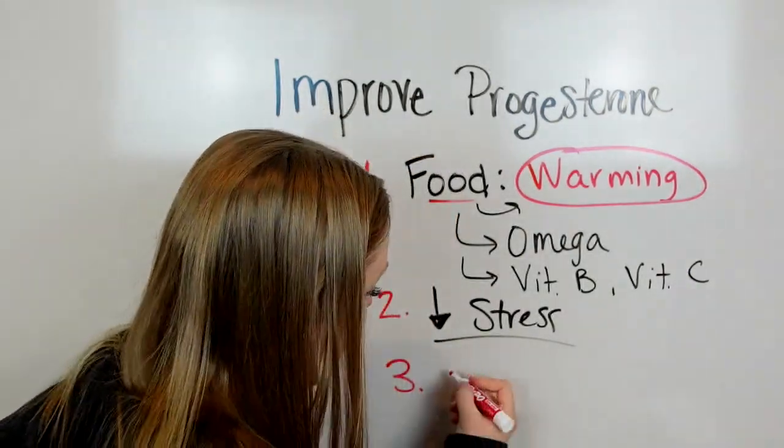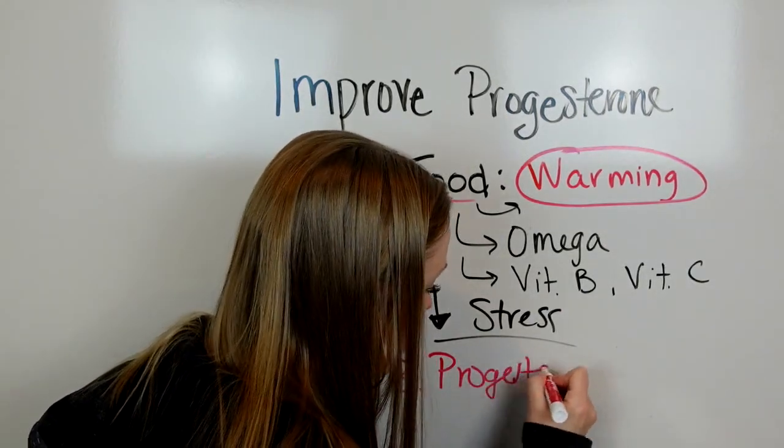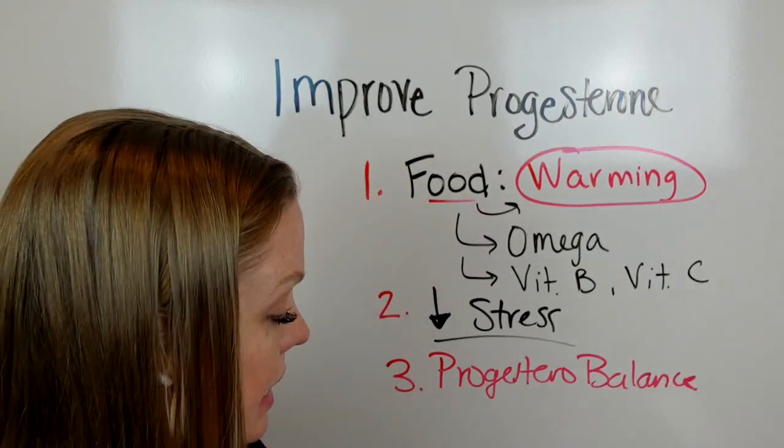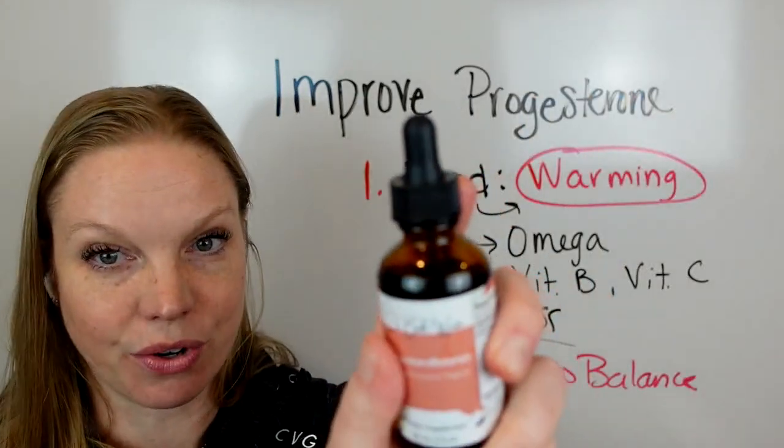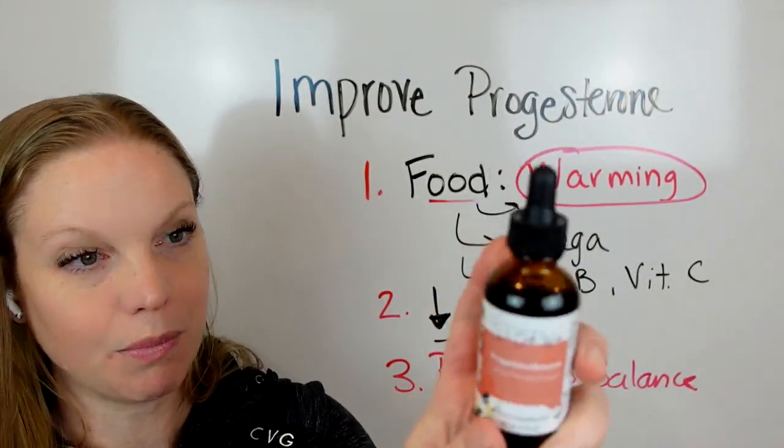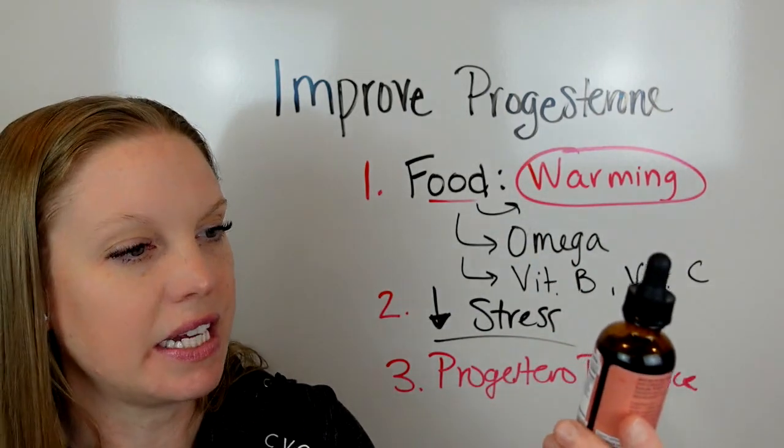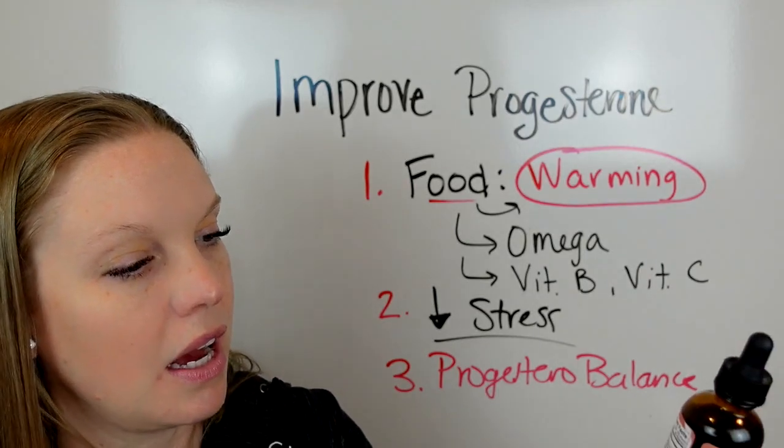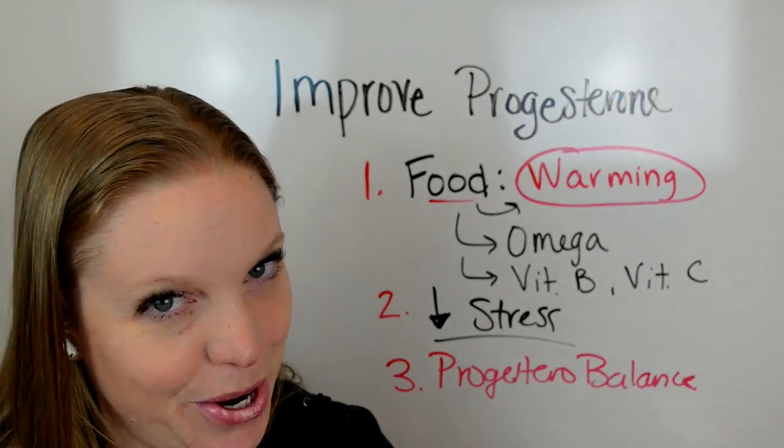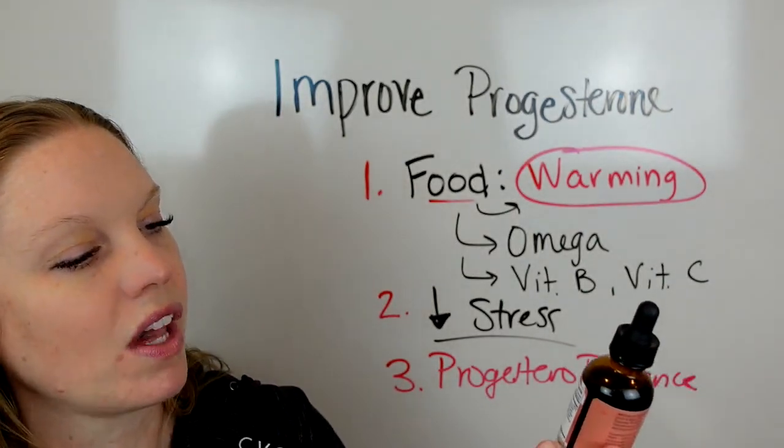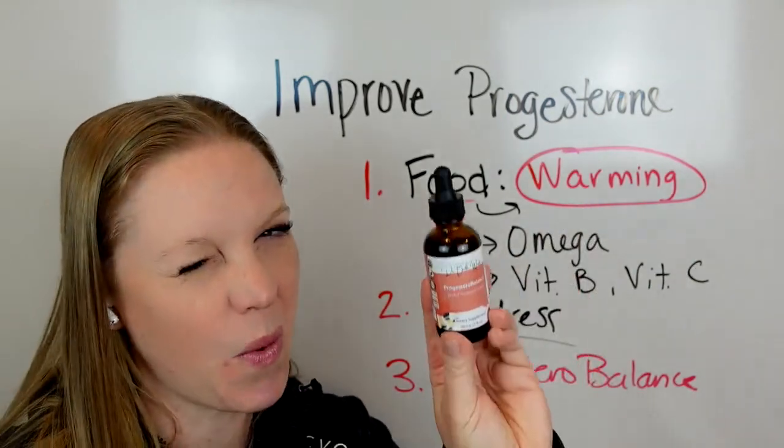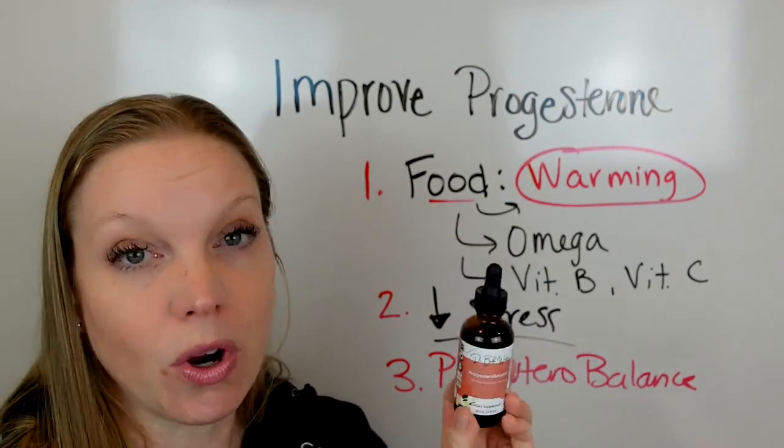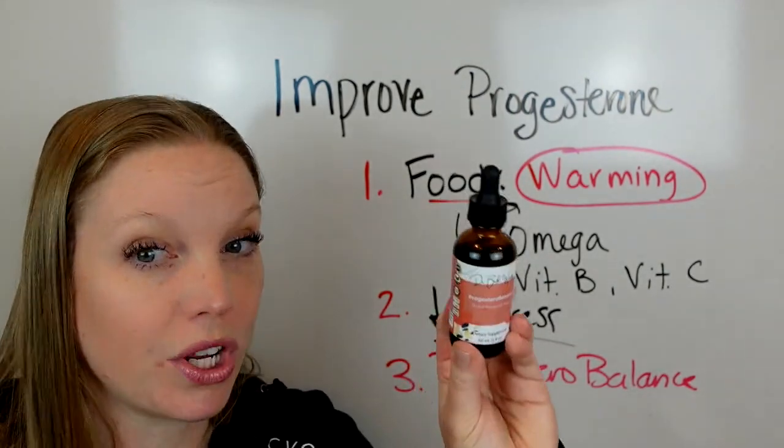And then three, this is what I'm very excited about: progesterone balance. If you're like, what is that, what does that do? This is the tincture that I created and formulated for the female body, Progesterone Balance. There are herbs in this: vitex, red raspberry leaf, damiana, ginger, oregano, vervain, myrrh. I just love saying that. And cayenne. So it's a little spicy, it's got that warming kick to it. What's so important about these herbs in here? These herbs are specifically designed to help your body create and maintain the correct amount of progesterone for you.